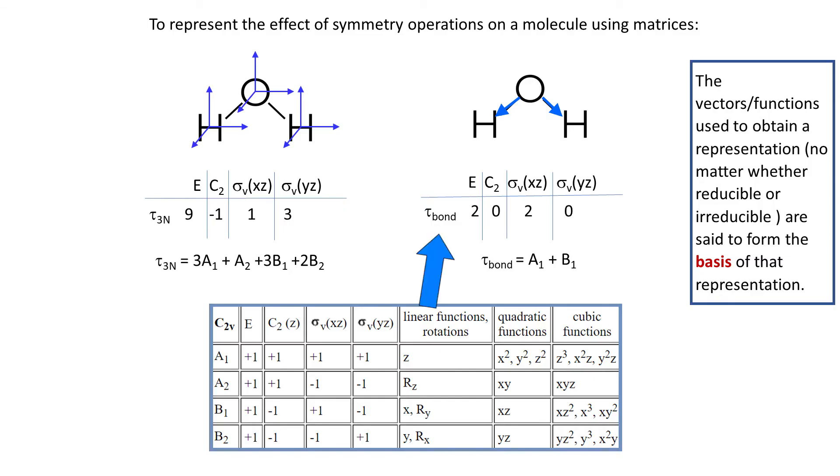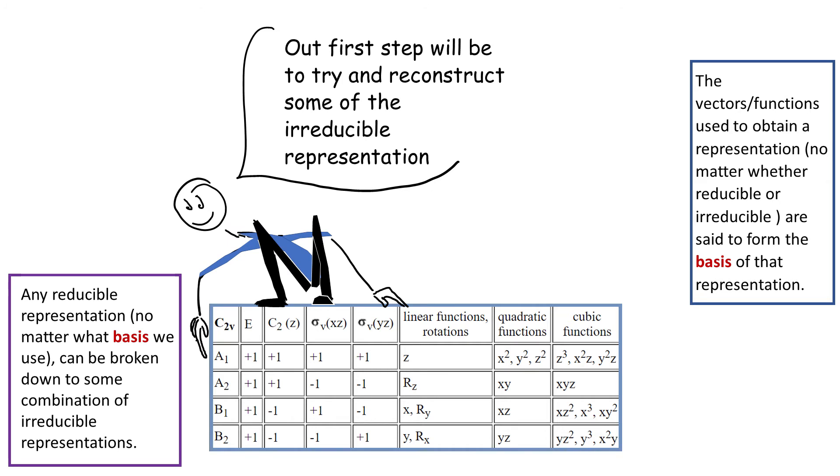Just a side note, reducible representations, on the other hand, by convention are given symbol tau. So for the rest of the video we will be examining some irreducible representations and we will be talking about some important properties that they have. Our first step will be to try and reconstruct some of the irreducible representations so that we get some insight as to where the numbers come from.